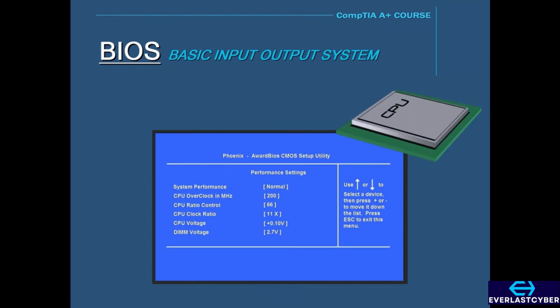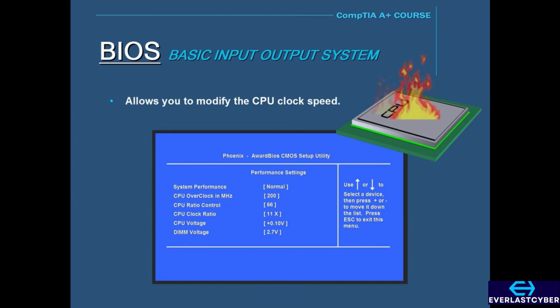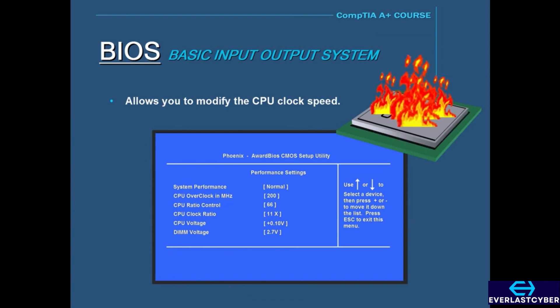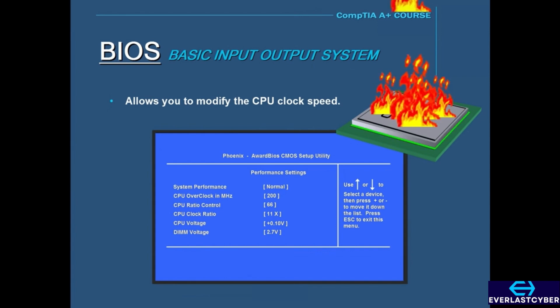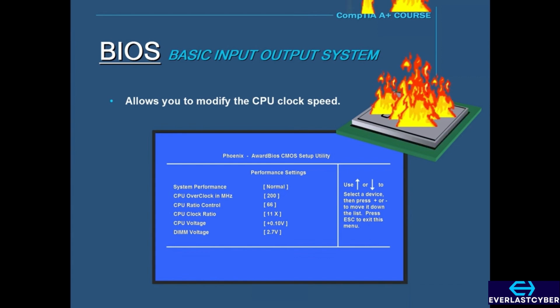The BIOS also allows you to modify the CPU clock speed by either increasing it to make the computer run faster — which as a result will increase the temperature — or by reducing the clock speed, which will make the computer run slower but will lower the temperature of the CPU. This could be especially useful if your computer is having overheating issues.